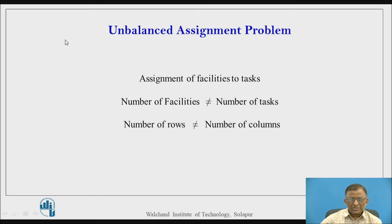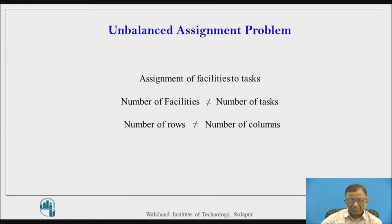The unbalanced problem arises whenever the number of facilities to be allocated is not equal to the number of tasks. For example, if the number of workers is not equal to the number of jobs to be performed, then it is called an unbalanced assignment problem. When you construct the effectiveness matrix, if workers are not equal to jobs, the number of rows will not equal the number of columns — it is not a square matrix. Whenever the effectiveness matrix is not square, it is called an unbalanced assignment problem.